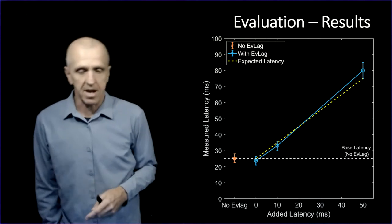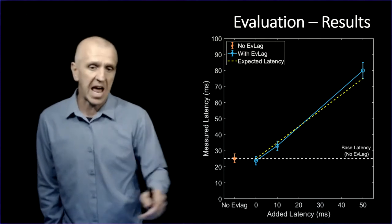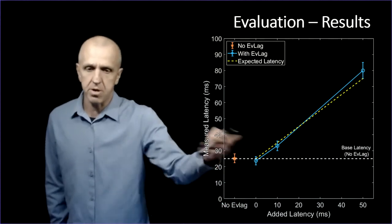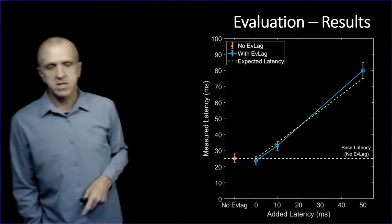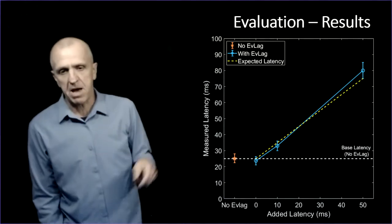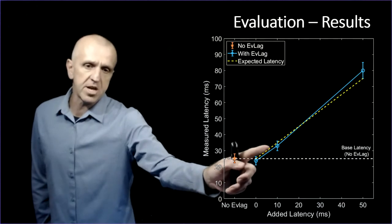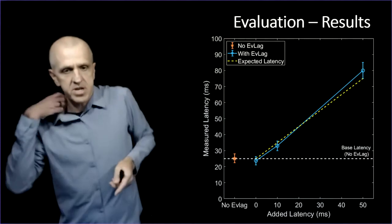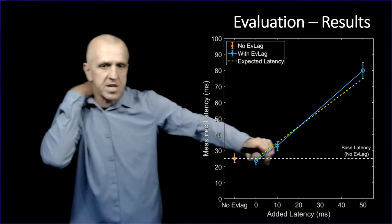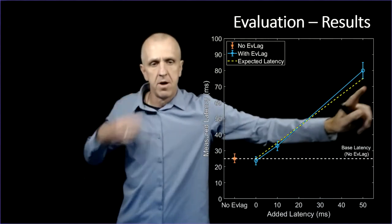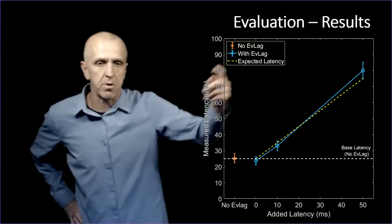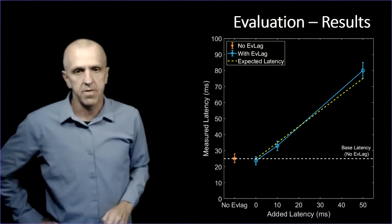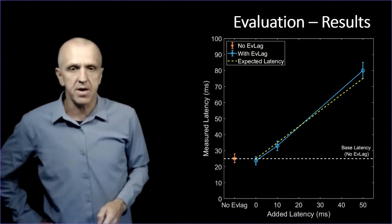If I run EvLag, this first case says what is EvLag doing just running? Is it interfering, adding latency because of overhead? This is EvLag with no added latency. The mean is actually a little lower, but those confidence intervals overlap. EvLag by itself as overhead is not adding substantial latency. Then we can look at ten milliseconds of added latency with EvLag, that point is fifty, with the mean and confidence interval where that yellow dashed line is how much I might expect to observe. Those points follow that line pretty well within the confidence interval, suggesting EvLag is doing a good job of controlling the latency I want to add to the input events.